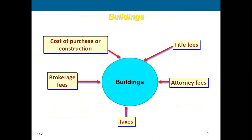For buildings, the acquisition cost includes not only the purchase price or construction cost, but also title fees, attorney fees, taxes, brokerage fees, sales commission fees — any one-time fees to get it ready for use. This will come into play as we continue, especially when constructing a new building, where we'll end up including interest capitalization and other costs in the cost of the building.